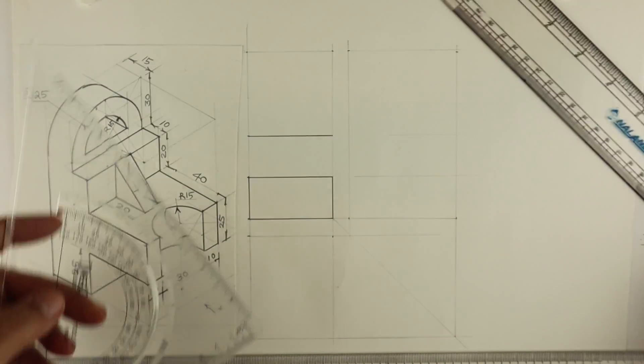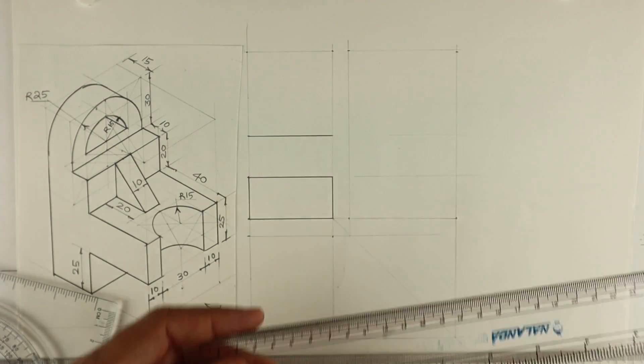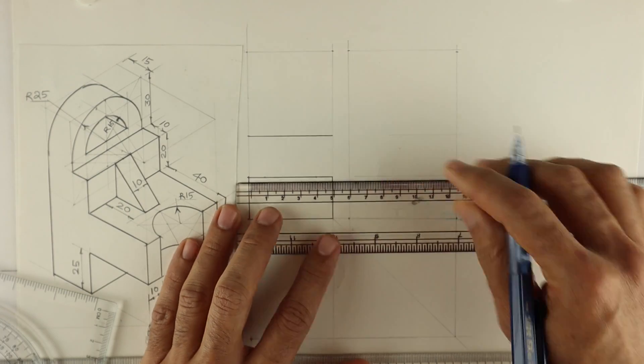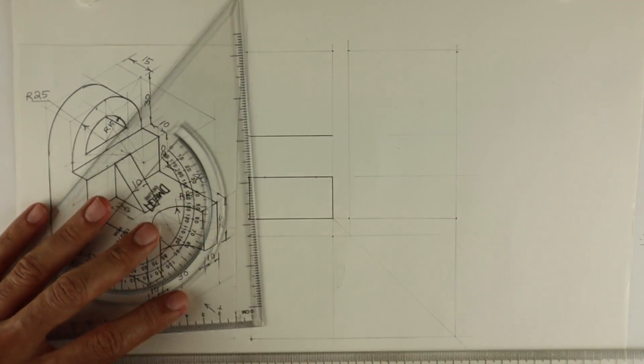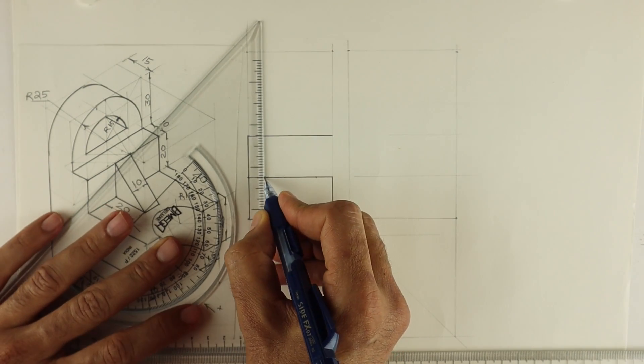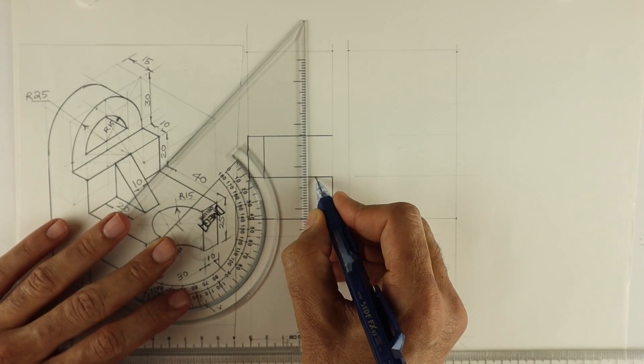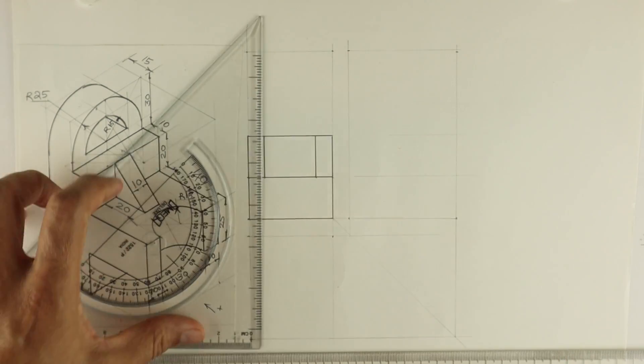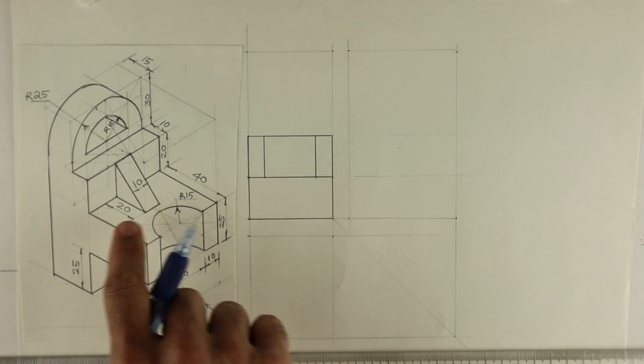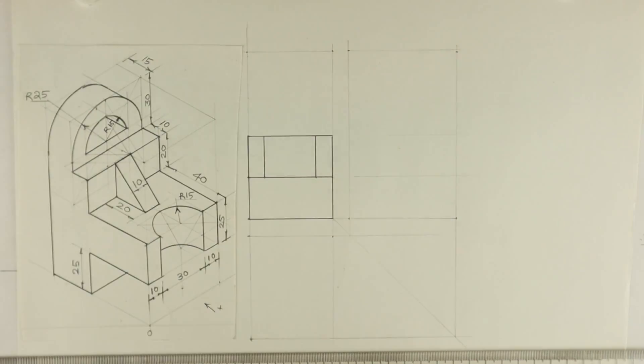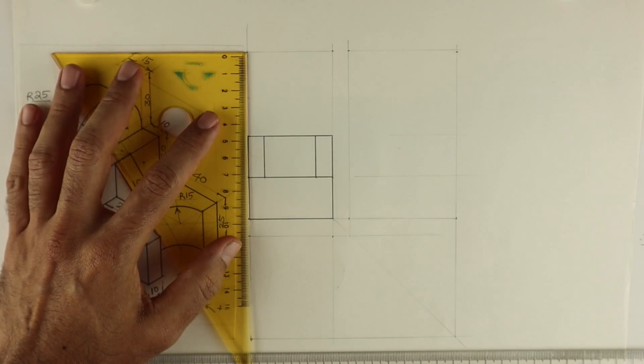Then 10, 30, 10. So we can directly mark 10. Then we have that circular arc which will appear as a rectangle in front view, so it will be a rectangle of 30 by 25. See this, this is 10. Now after that, this part, this is 20, 10, 20. Height is 20.